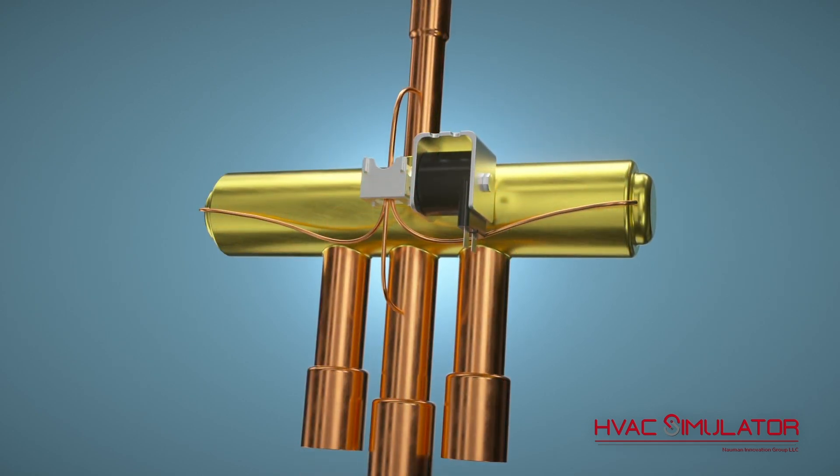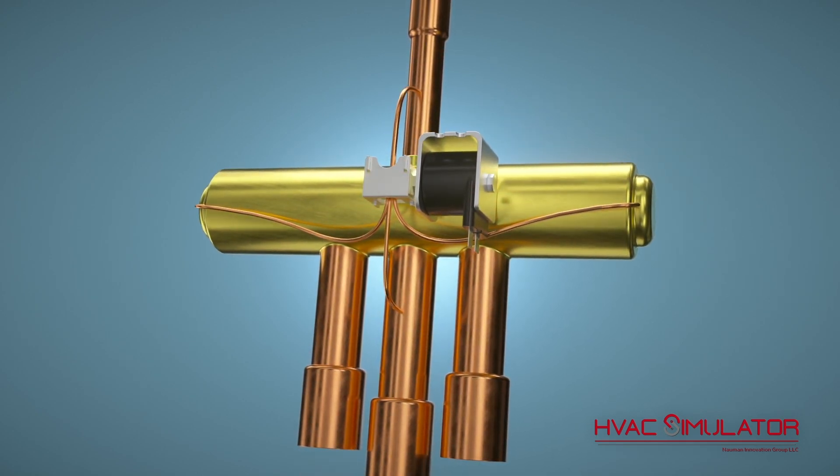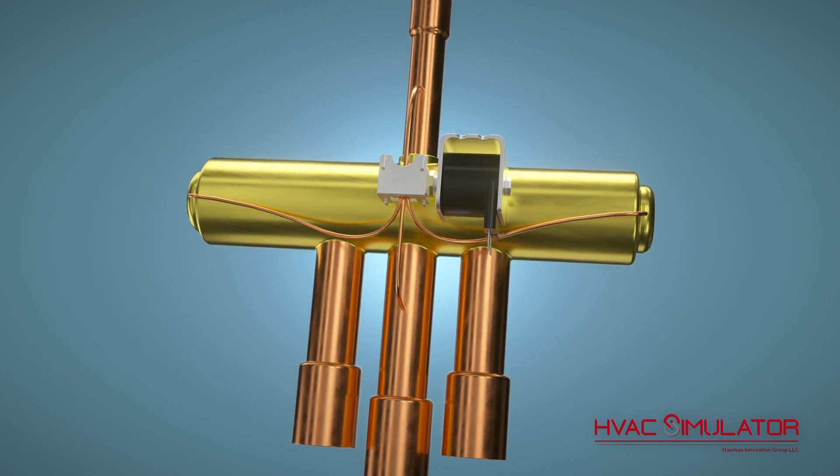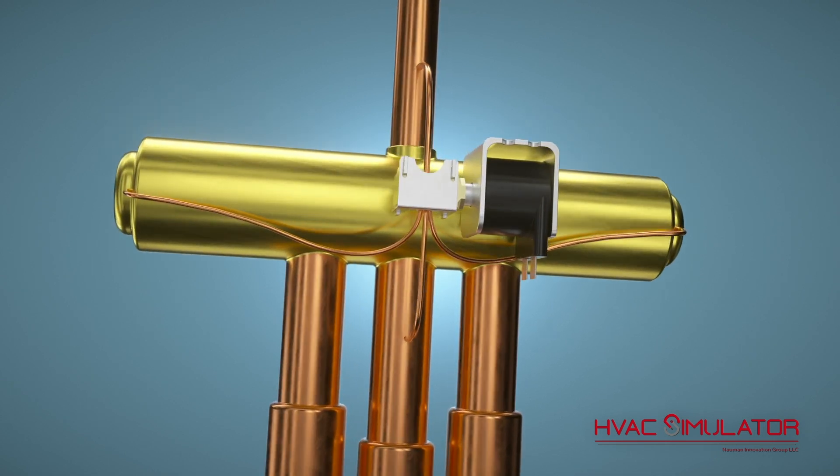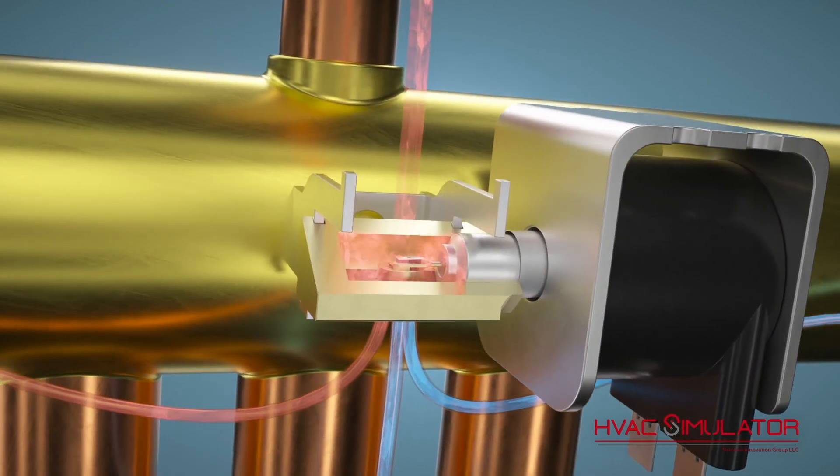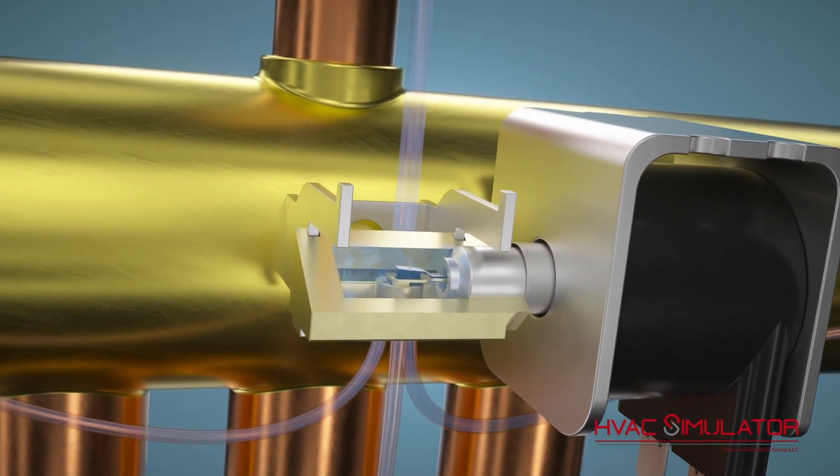When the thermostat satisfies the cooling call, the contactor at the heat pump de-energizes, but the solenoid stays energized. Without the discharge pressure from the compressor, the valve on the stem opens and equalizes all the pressures in the reversing valve.